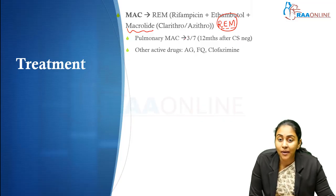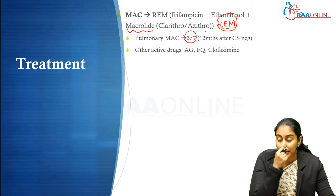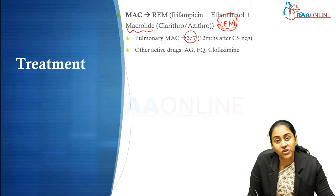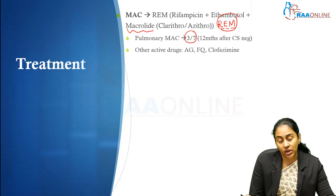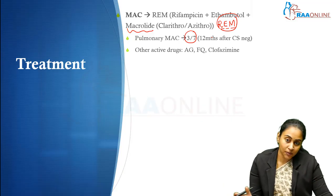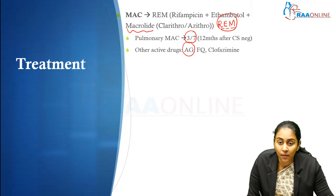Pulmonary MAC may be treated three times a week, but disseminated MAC generally requires daily treatment. Similarly, patients who have severe pulmonary MAC require daily treatment. We generally treat these patients for up to 12 months after culture negativity — from the time they become culture negative, you calculate a 12-month period. If you cannot use one of these drugs, alternative medications active against MAC include aminoglycosides, fluoroquinolones, and clofazimine.